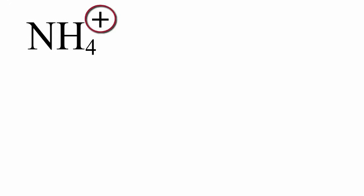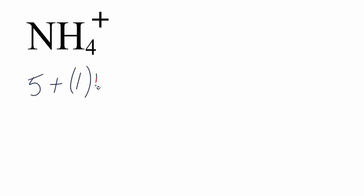We have something a bit odd with this Lewis structure — that plus sign up there. Whenever you have a plus sign, it means the ion compound is positive, and to be positive it lost an electron. So when we write up the number of valence electrons: nitrogen has five, plus the four oxygens, we need to subtract one valence electron because the plus means we've lost one. If this were a negative sign, it would mean we gained one. So five plus four is nine minus one — we have a total of eight valence electrons for this NH4+ ion.